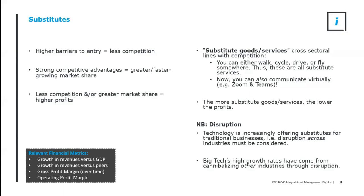Consider disruption. Technology is increasingly offering substitutes for traditional businesses, creating disruption across industries. Big tech's high growth rates have ultimately come from cannibalizing other industries through disruption. Google and Facebook's advertising revenue has come at the sacrifice of traditional media houses, television stations, and radio stations' advertising revenues. Microsoft's operating system cannibalized the stationery industry and traditional ways of running offices, for example. In considering barriers to entry and competitive advantages, you cannot look at it in isolation from substitute goods and services.